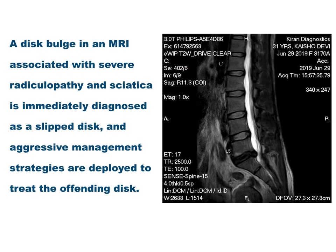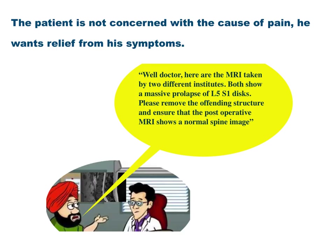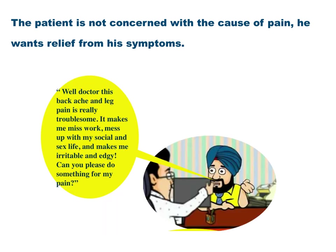A disc bulge on an MRI associated with severe radiculopathy and sciatica is immediately diagnosed as a slip disc and aggressive management strategies are deployed to treat the offending disc. However, the patient seldom approaches us showing us the MRI and asking us to take away the disc.